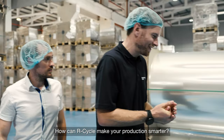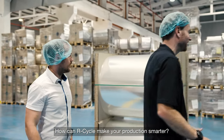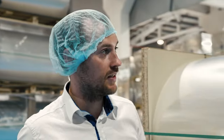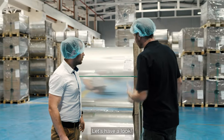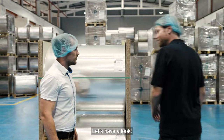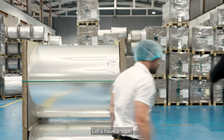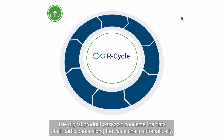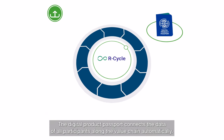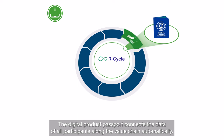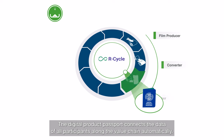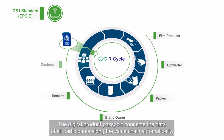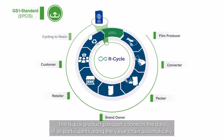How can R-Cycle make your production smarter? Let's have a look. The Digital Product Passport connects the data of all participants along the value chain automatically.